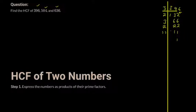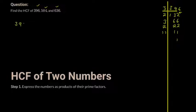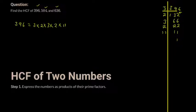Take note of my presentation because presentation is an important part of maths — you're communicating important ideas. So 396 equals the product of all the prime numbers we found. I have five numbers there, so I'm happy with this.